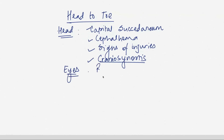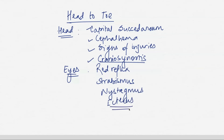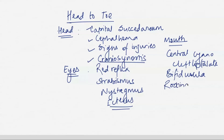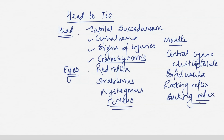In the eyes, you check for red reflex, strabismus, abnormal eye movements such as nystagmus, and any icterus. In the mouth, you check central cyanosis, cleft lip, and cleft palate — using a gloved finger to feel for any cleft. You also check for bifid uvula. You elicit the rooting reflex by stroking the cheek — the baby turns to that side — and the sucking reflex by placing a gloved little finger in the baby's mouth. These reflexes are present from birth.